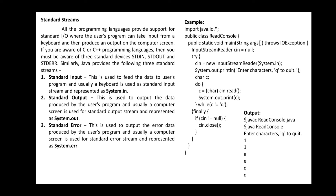Next, we move to standard streams. There are three different types of standard streams: input, output, and error. All programming languages provide support for standard input and output, where the user's program can take input from the keyboard and produce output on the computer screen. Java provides three standard streams similarly to C and C++.